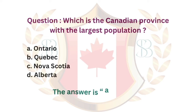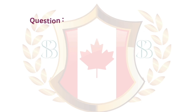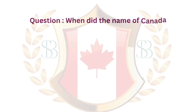Question. Which is the Canadian province with the largest population? a. Ontario. b. Quebec. c. Nova Scotia. d. Alberta. The answer is a. Ontario.